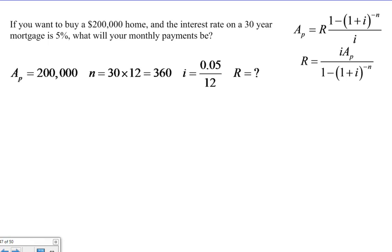So the first thing we do is label what we know. We know the present amount of the annuity is $200,000. We know that N is going to be 30 years times 12 months per year or 360 payments.